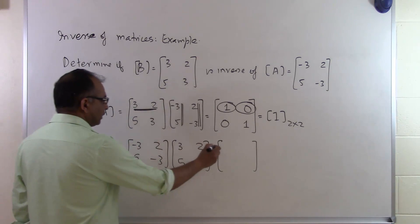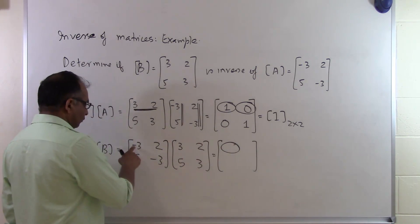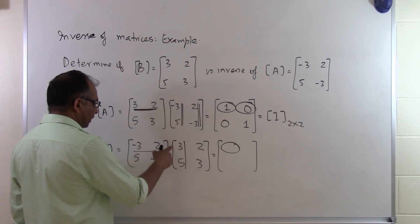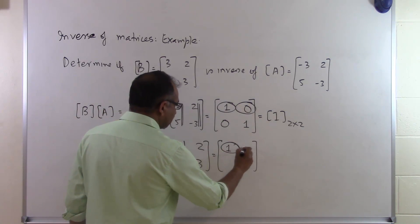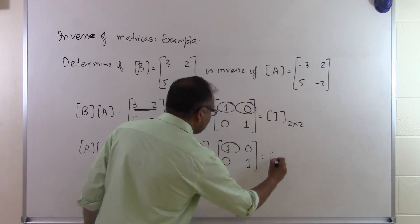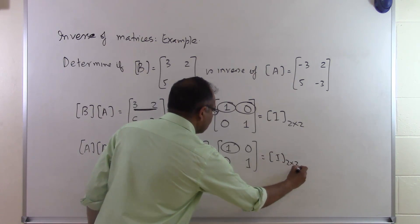For example, this element right here will be first row, first column. So minus 3 times 3 is plus 9, 2 times 5 is 10, so that addition gives me 1. So now you get 0 here, 0 here and a 1 here. So that itself is the identity matrix which is a 2 by 2 matrix.